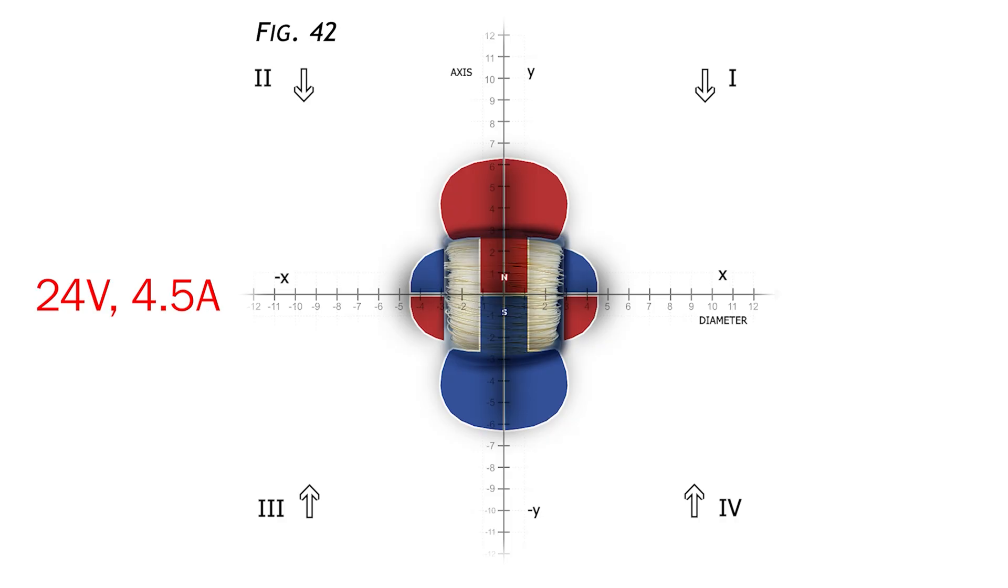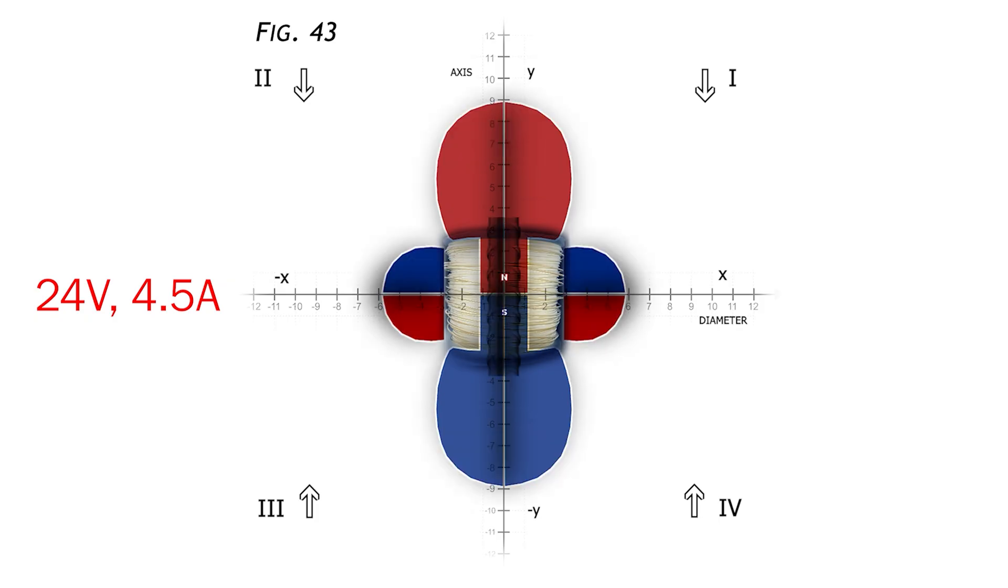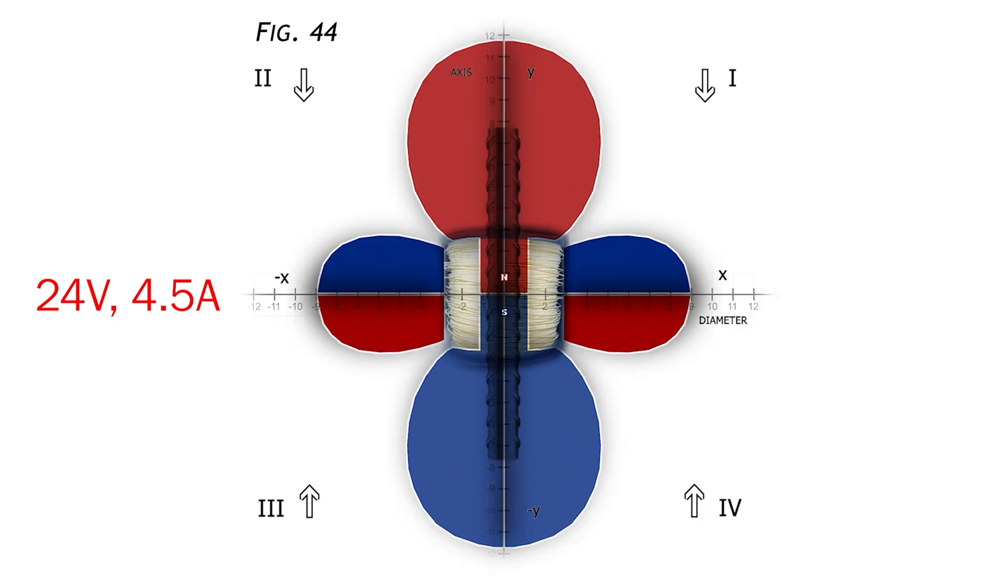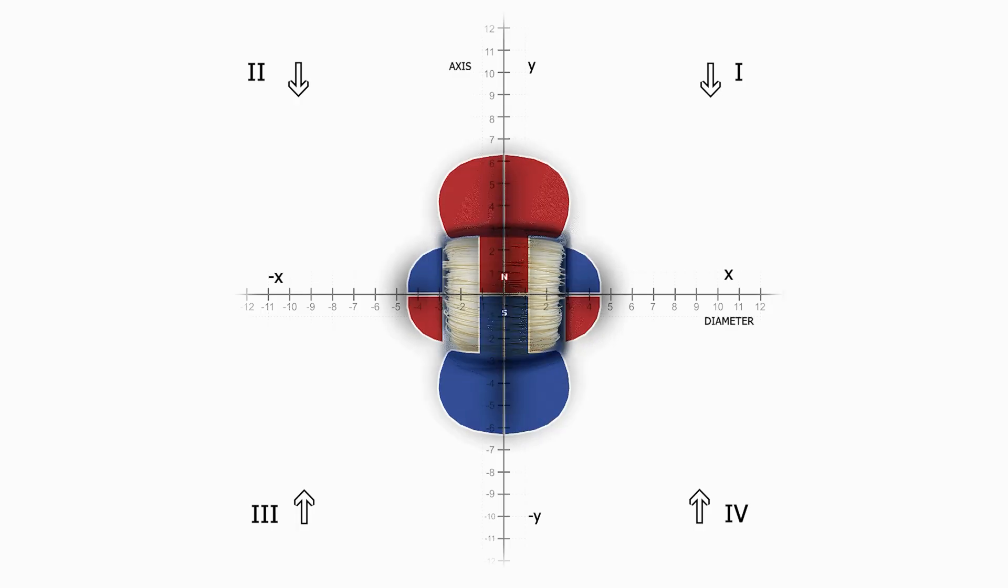Now, under the same high power condition of 24 volts, 4.5 amps, when iron of the same size as the core is inserted, the magnetic field expands significantly. And when the amount of iron in the core is tripled, the measurement looks exactly like that of a permanent magnet, with a dramatic expansion of the lateral polarities. And here's a GIF of that very sequence.